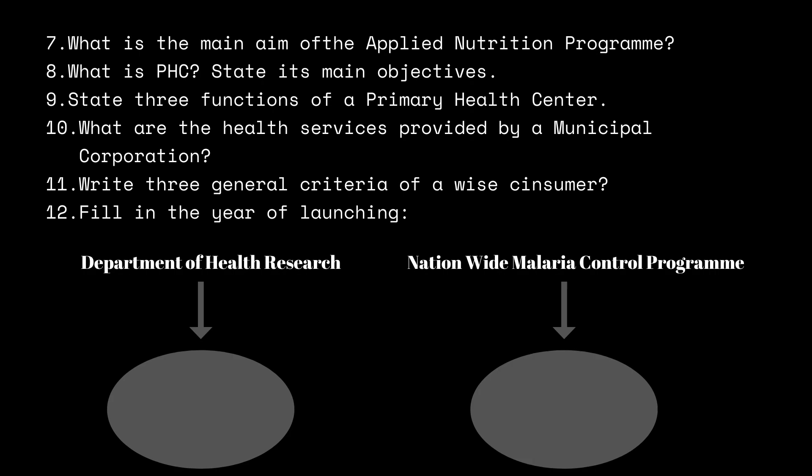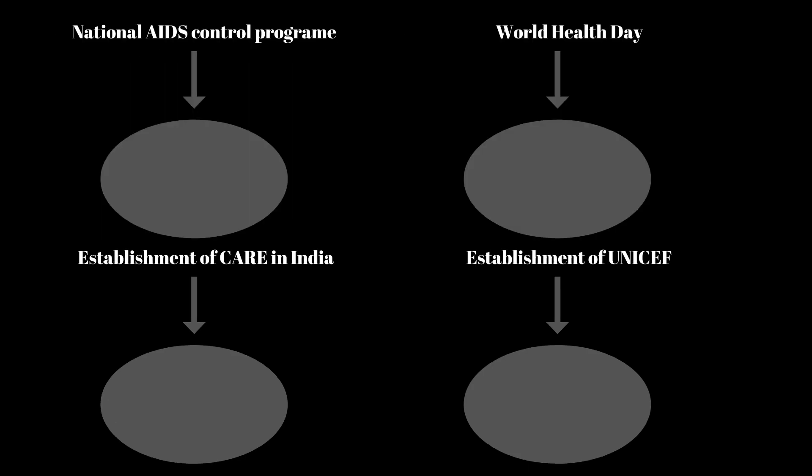Here are some short questions of one mark each — write the year of launching in the given circle. Department of Health Research — write the year. The nationwide malaria control program (MCP) — write the year in the circle. National AIDS control program — write the year. Then write the date of World Health Day, and the year of establishment of ICRC in India.